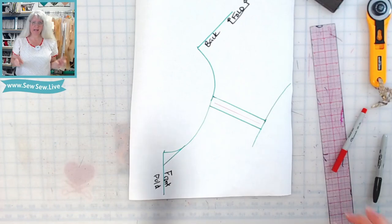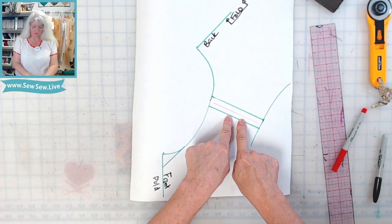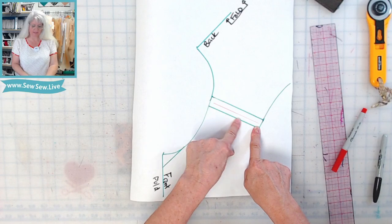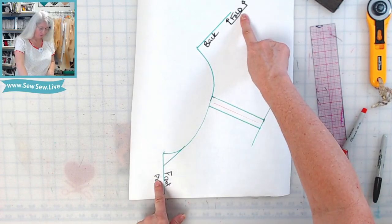So you can see I have my front and my back traced off. They're overlapped on the shoulders here on the seam line. They're both on the fold.